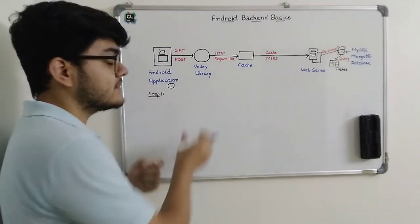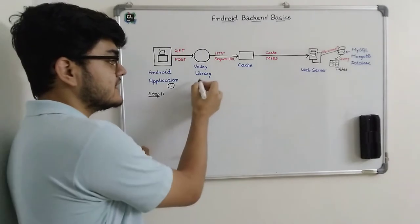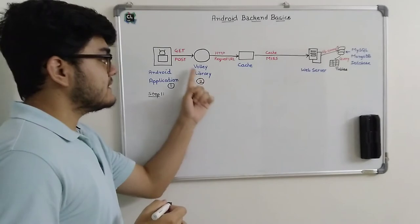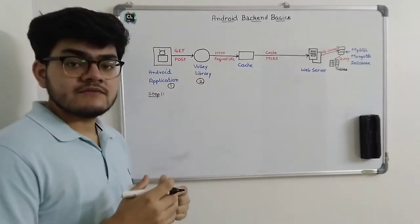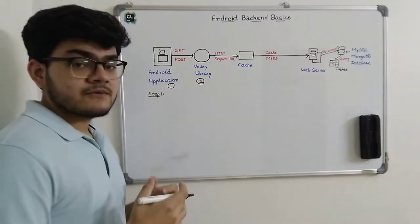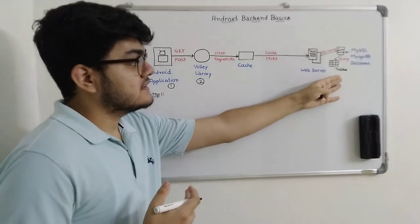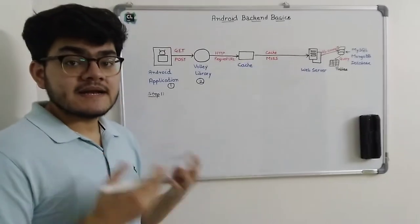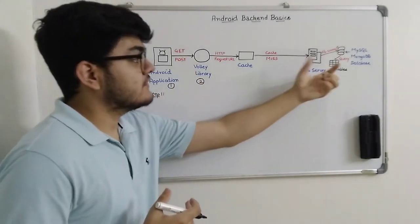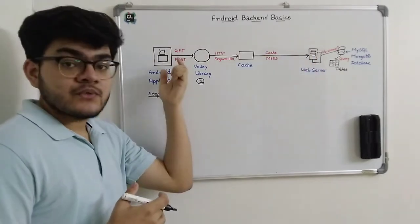Here we have the Volley library, which is supported by Google. We will install the SDK of this Volley library in the second step. The Android application will give a GET or a POST request. In a POST request, we try to insert something or update data in our tables. In a GET request, we try to fetch data from the tables or from the database to the application.